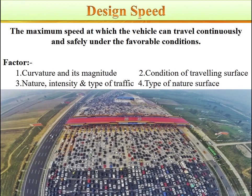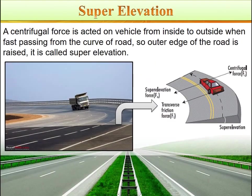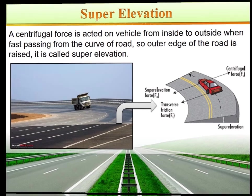Design speed is the maximum speed at which a vehicle can travel continuously and safely under favourable conditions. A centrifugal force is active on a vehicle from the inside to outside when fast passing from the curve of road, so the outer edge of the road is raised — this is called super elevation.